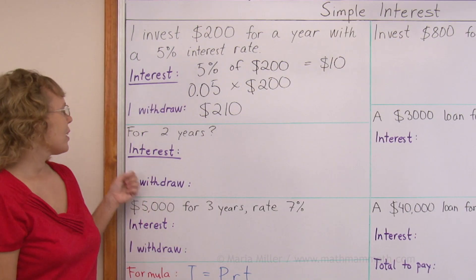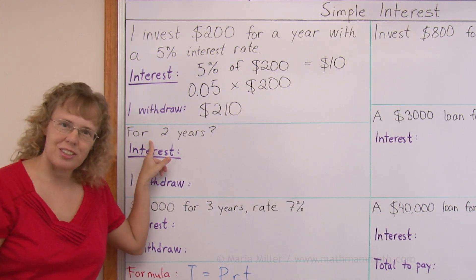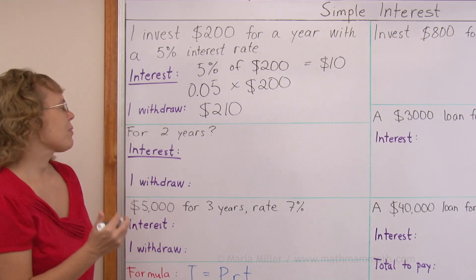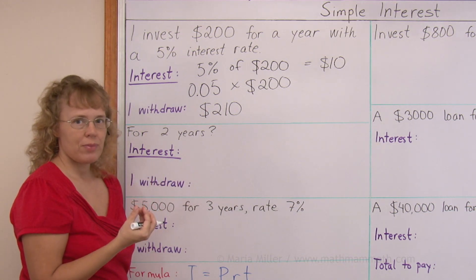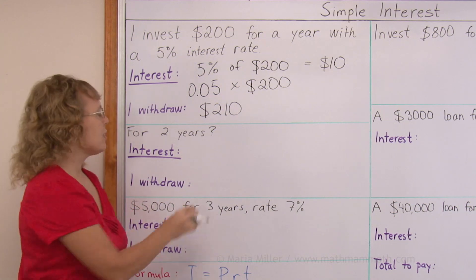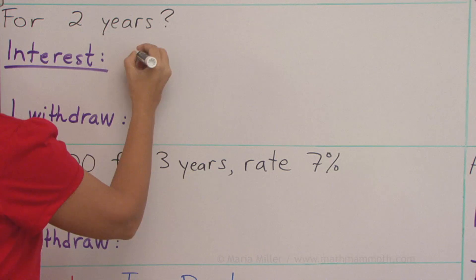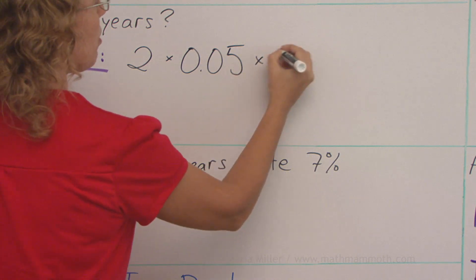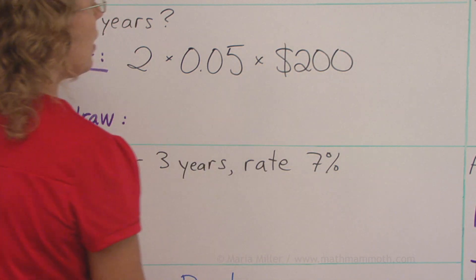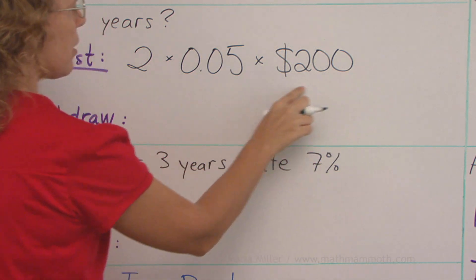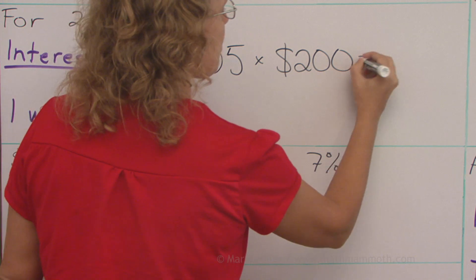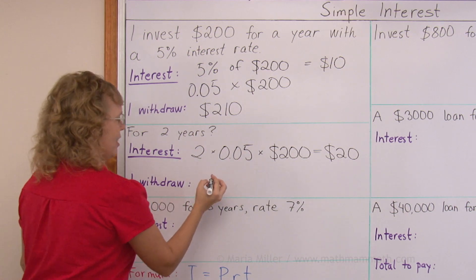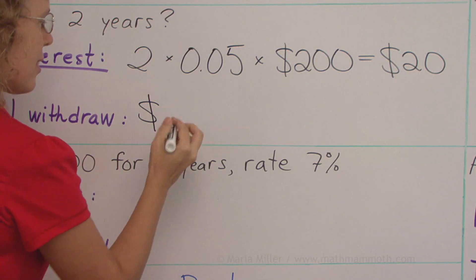Now let's take the same example: I invest $200, but for two years, and the interest rate is the same, 5%. In this case, we simply multiply the interest by two. In the previous problem the interest was for one year; now it is for two years, so we get two times 5% times the principal of $200. We already figured out that one year's interest was $10, so two times that would be $20. If I leave my money in the bank for two years, I can withdraw the principal plus the interest: $220.